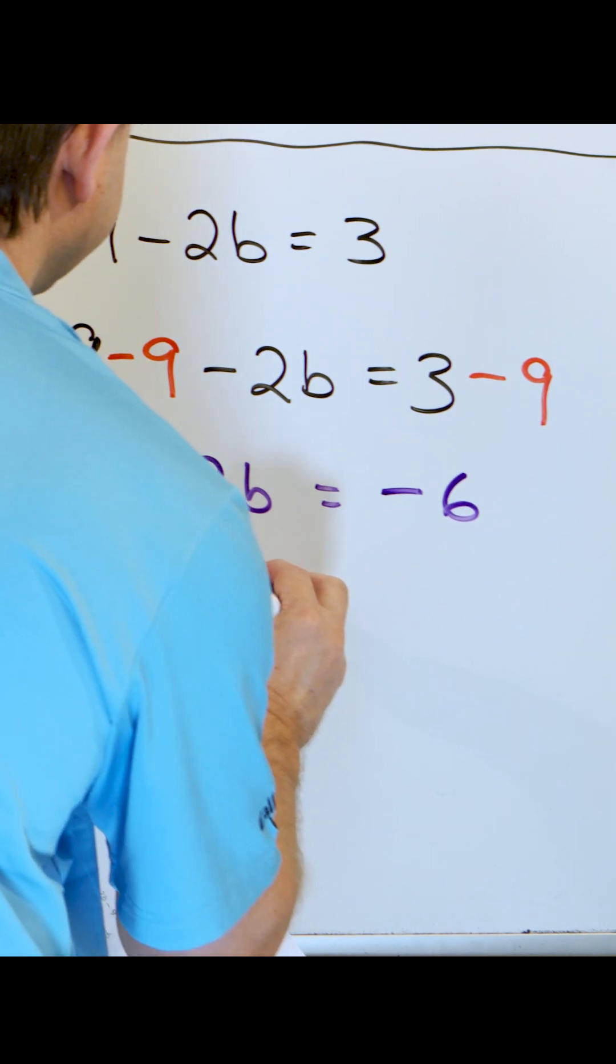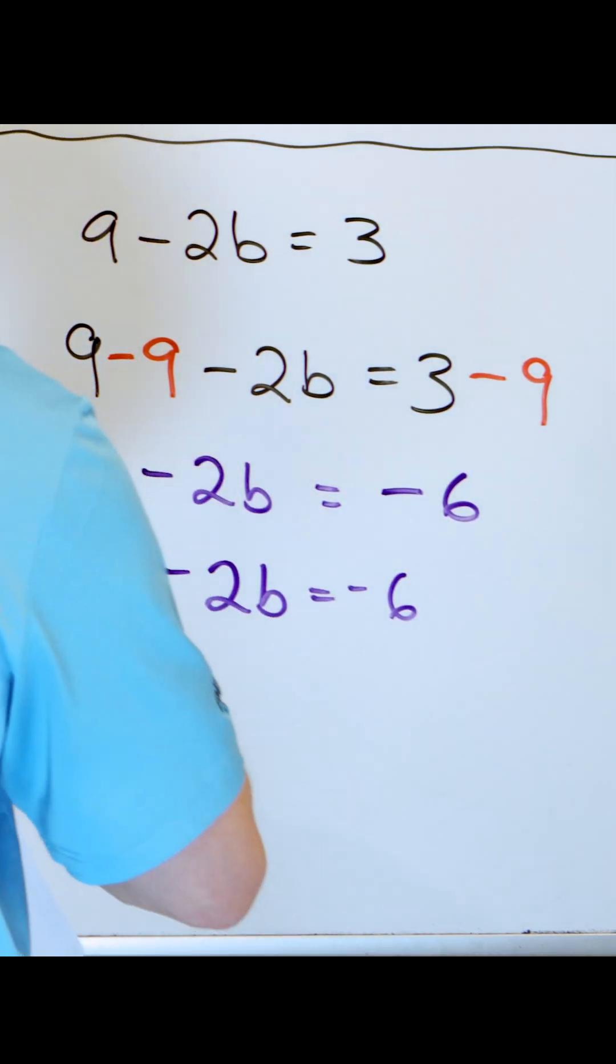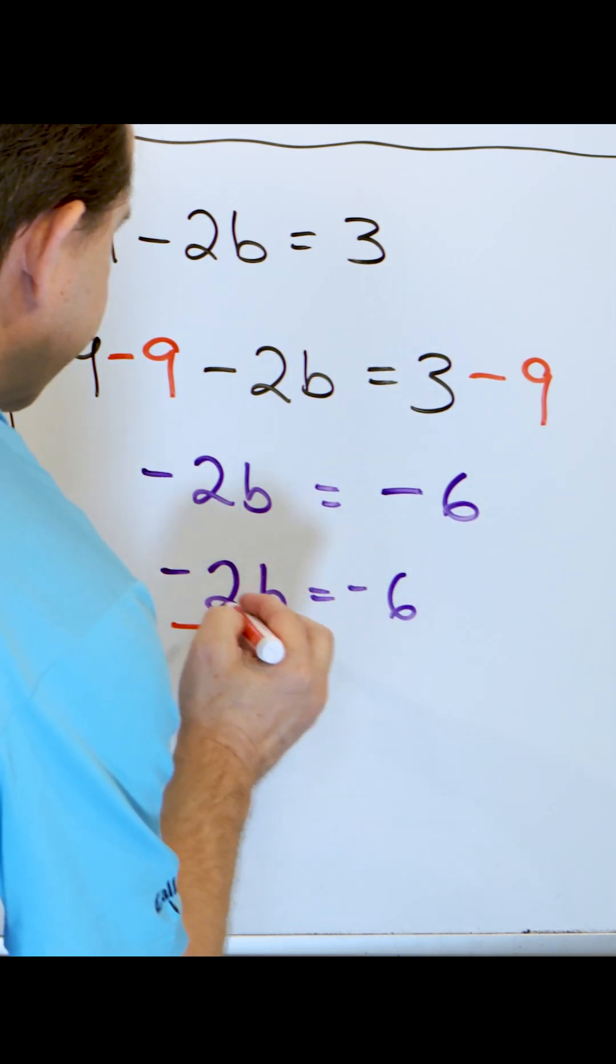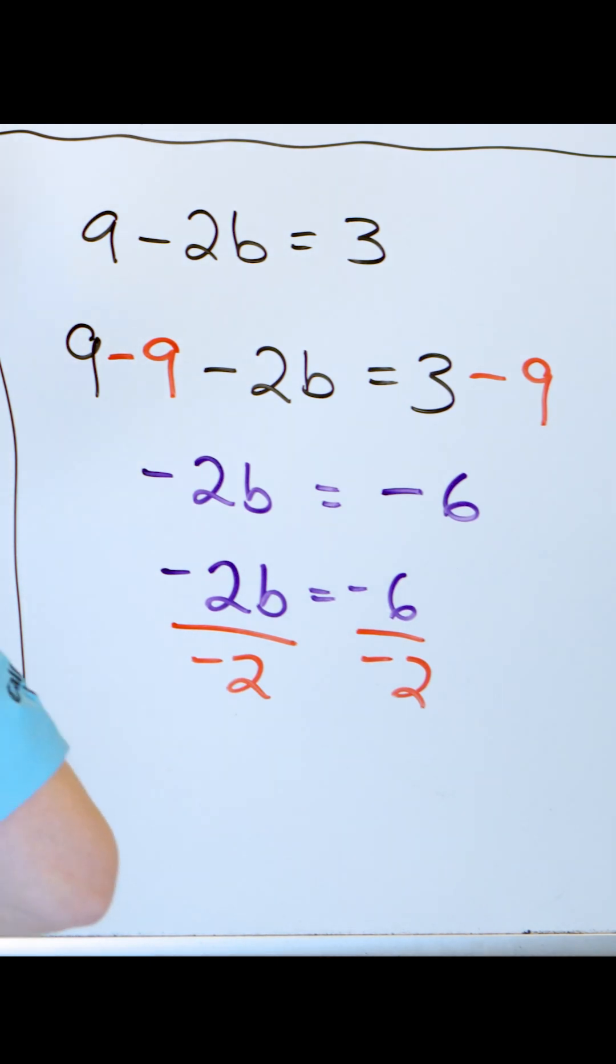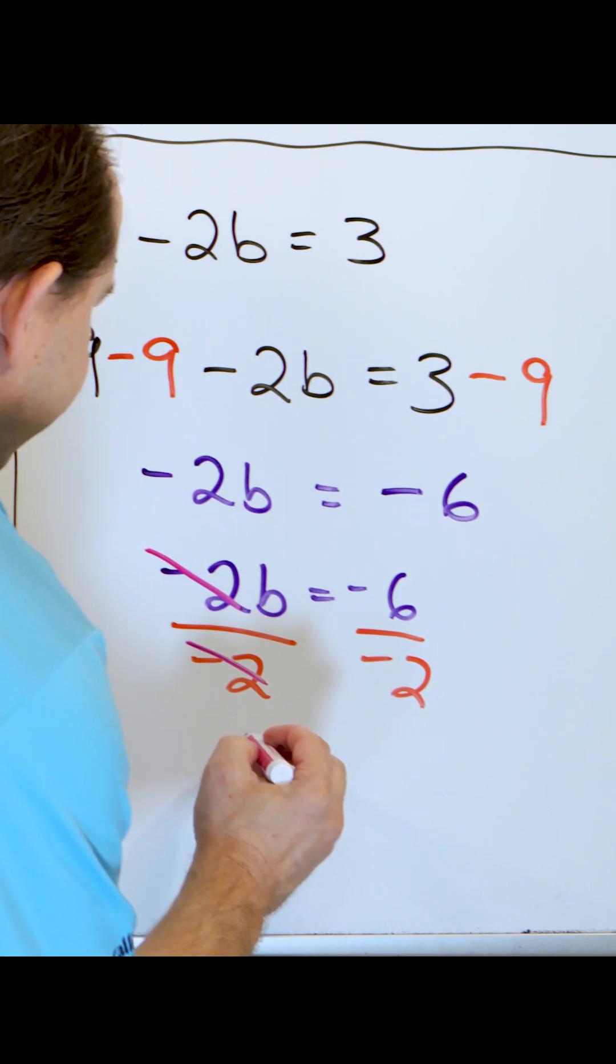Here I have something I'm gonna rewrite, negative two b, negative six. So here I'm going to then divide by negative two because I'm multiplying by negative two here. And what's gonna happen is the negative two will cancel with the negative two. I will be left with just a simple b.